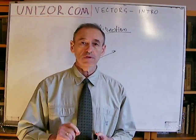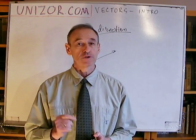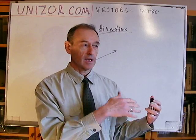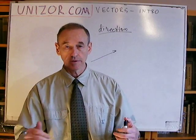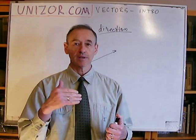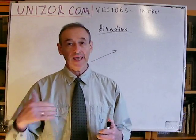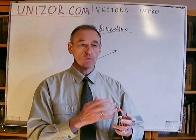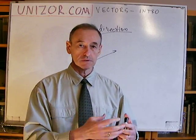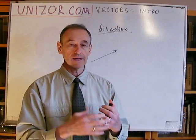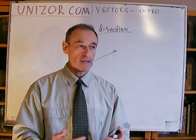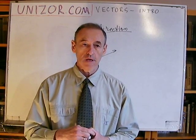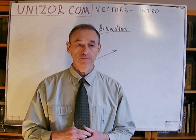But it also includes the concept of quantity. So if a number is an abstraction from quantity, a vector is actually an abstraction from both quantity and direction. If you take an object which has these two properties — quantity and direction — then you can represent this object mathematically as a vector.